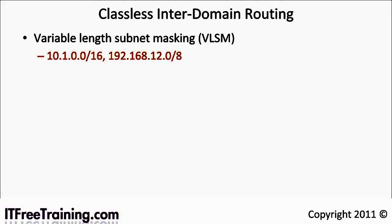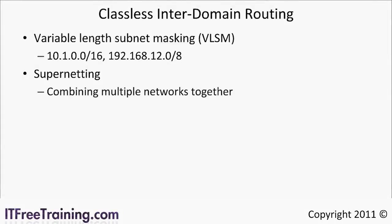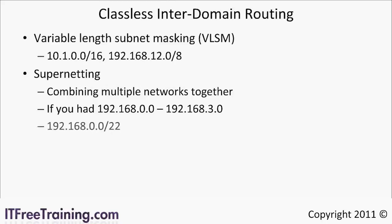Using classless inter-domain routing you can also perform what is called supernetting. Supernetting combines multiple networks together to form a larger network. If you had the networks 192.168.0.0 to 192.168.3.0, this would be 4 class C networks with 254 hosts in each network. If you needed a larger network, you could combine the networks into one using supernetting. By using the subnet mask /22 you can combine the 4 networks into one, giving you one network with 1022 hosts. Once you start using classless inter-domain routing, the IP address space can be divided up any way that you want without any of the limits imposed by classful networking.